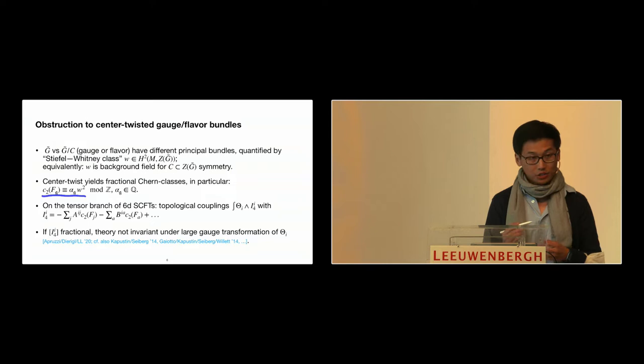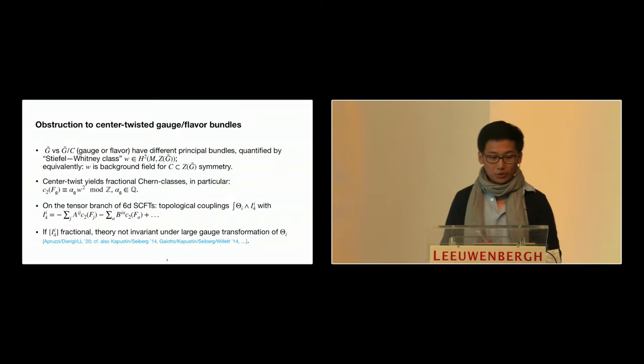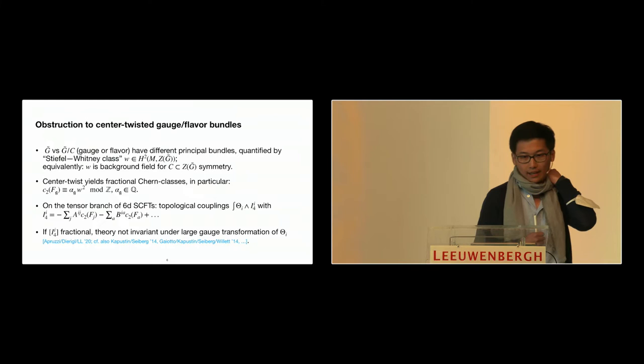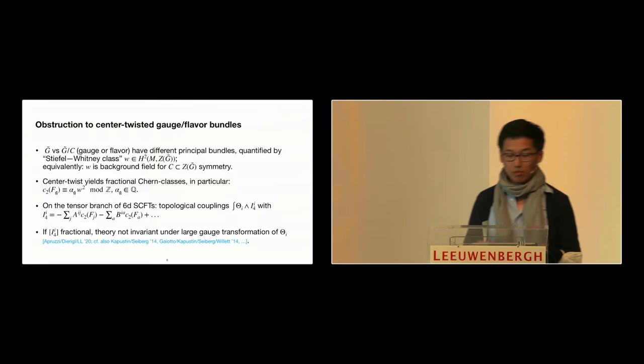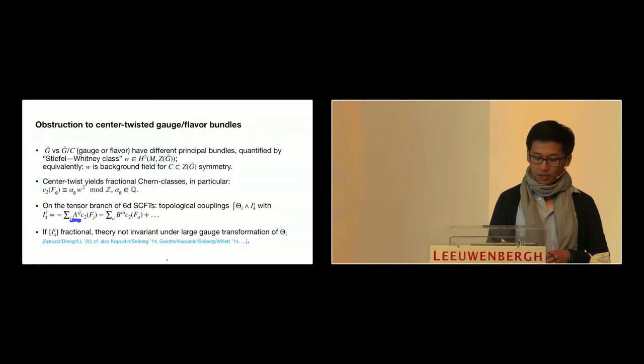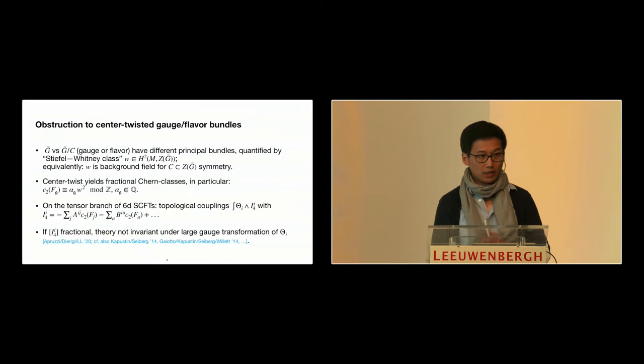In the language of higher-form generalized symmetries, you can really think of this Stiefel-Whitney class as the background field for your center flavor symmetry. One effect of turning on the background for such a center symmetry is that your Chern classes associated to these principal bundles become fractional. For each type of algebra, there is a coefficient alpha that is specific to the algebra. Because these things are fractional, you get a fractional cohomology class for your second Chern class.